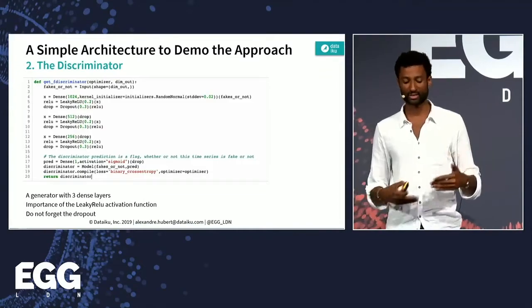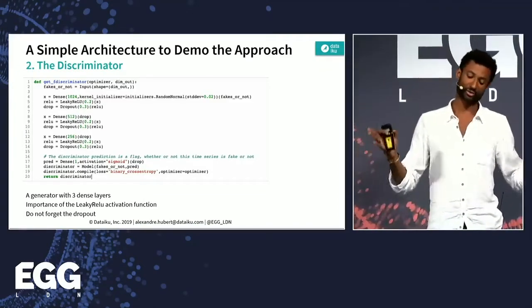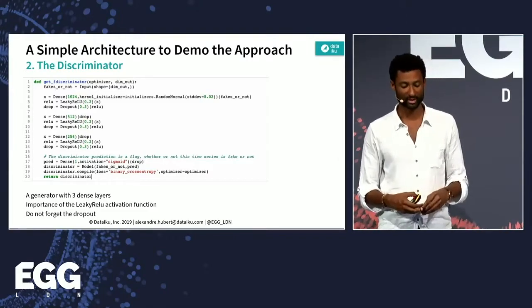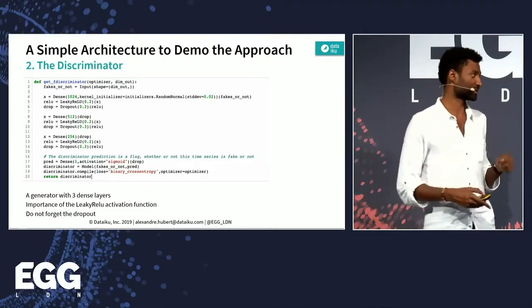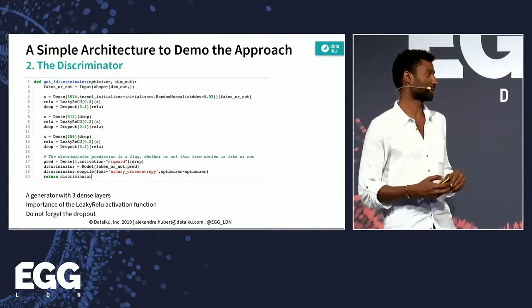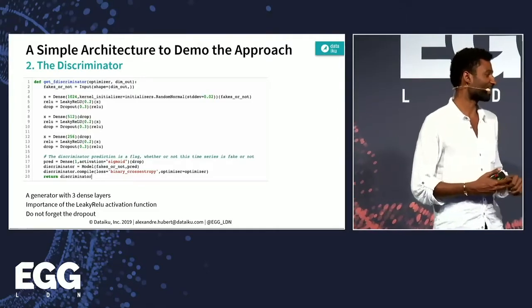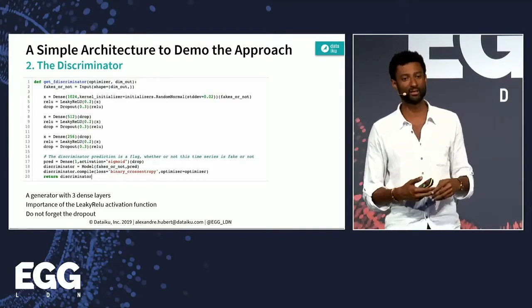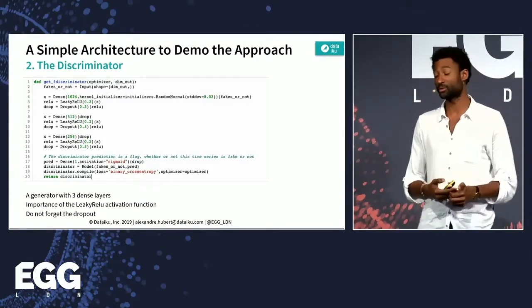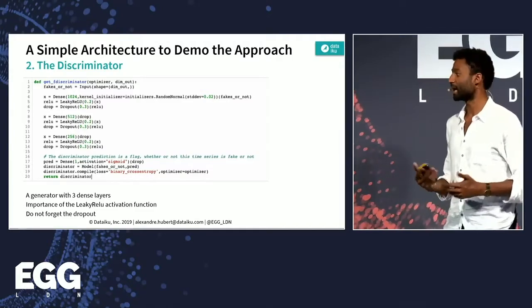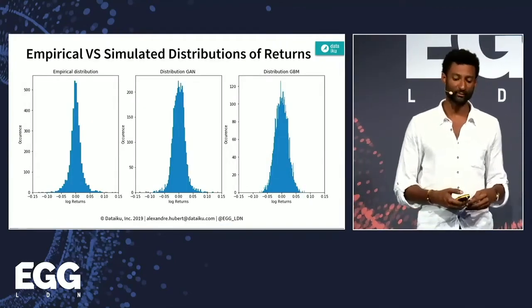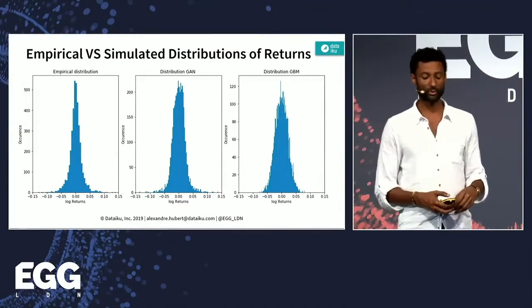This is the actual architecture of the generator — extremely simple: just dense layers stacked with leaky ReLU activations in between. For the discriminator, also something very simple: three dense layers that try to predict whether a given sequence is an actual time series or not. Do not forget the dropout — it's the first time I worked on a use case where I saw a significant improvement from using dropout.